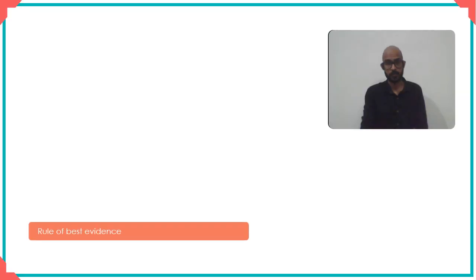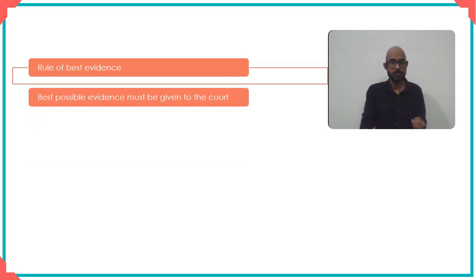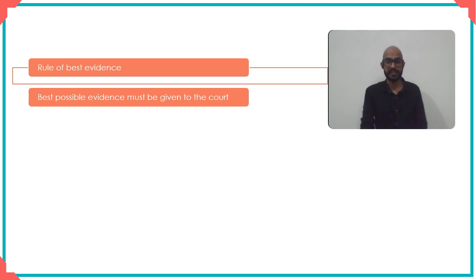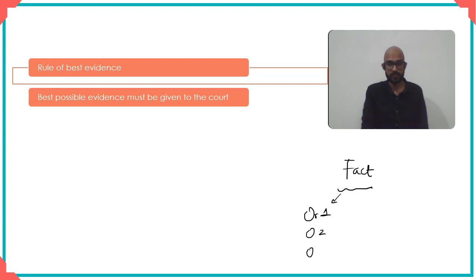The rule of best evidence is essentially the rule of the best possible evidence. That means when you have a certain number of choices of evidence that can be given to the court for a certain fact, you must give the best out of those. A fact can be proved through multiple pieces of evidence — oral evidence one, two, three, meaning first witness, second witness, third witness — likewise documentary evidence one, two, three.